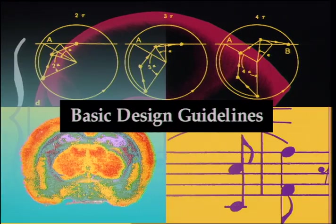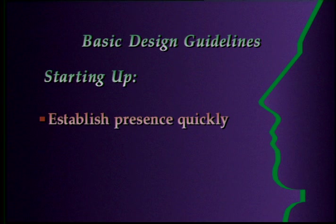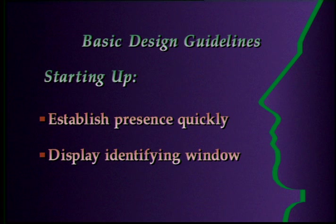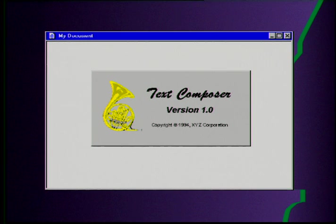Now that we've covered design attitudes, principles, and process, let's cover some more specific recommendations. Let's begin where the user begins: with the initiation or execution of a particular software program. When a user invokes your application, it should establish its presence quickly. A user's tolerance for waiting is not very long, so don't depend solely on a wait pointer. Put up the title and frame of the initial window, or some form of a title window, as quickly as possible to let the user know that the system is responding. Restore the window's state — such as its size and position when it was last used — to provide stability in the interface.